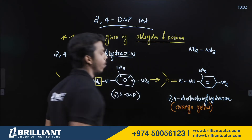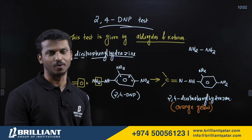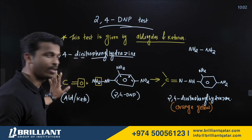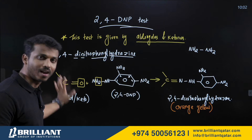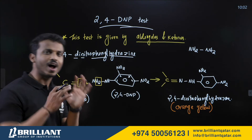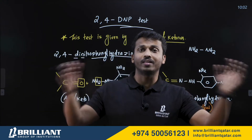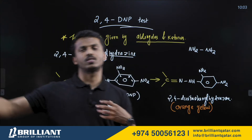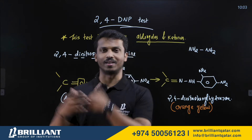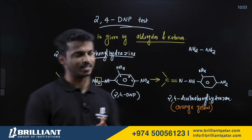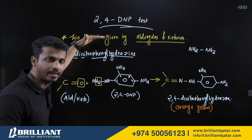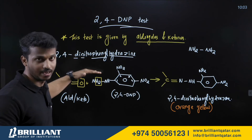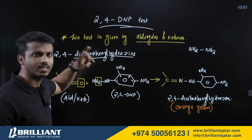If you obtain this orange-yellow colored product, you can confirm that your reactant is either an aldehyde or a ketone. So to distinguish aldehydes and ketones from other compounds like carboxylic acids, alcohols, or esters, you use the 2,4-DNP test. Reagent: 2,4-dinitrophenylhydrazine; observation: orange-yellow precipitate.